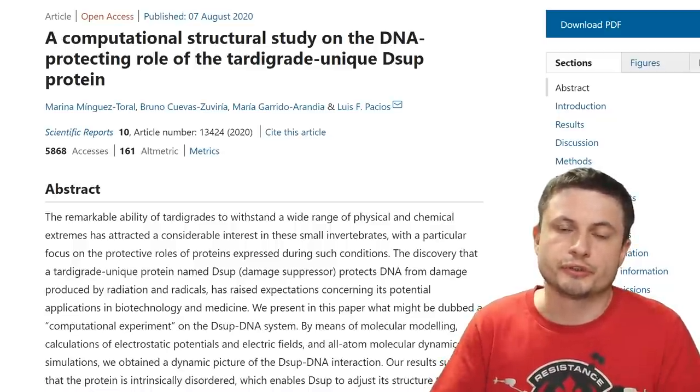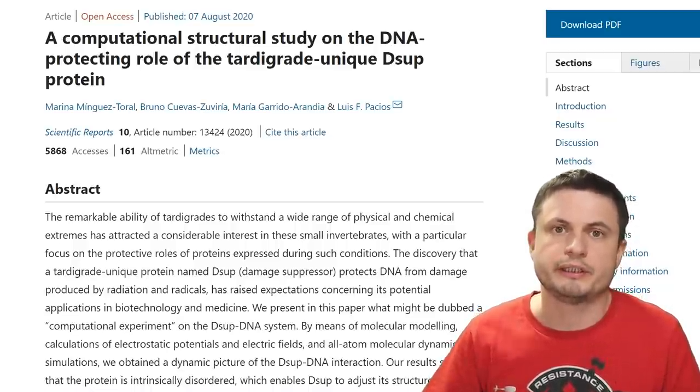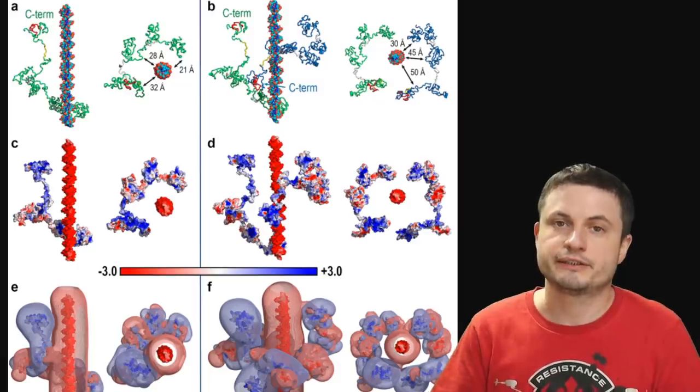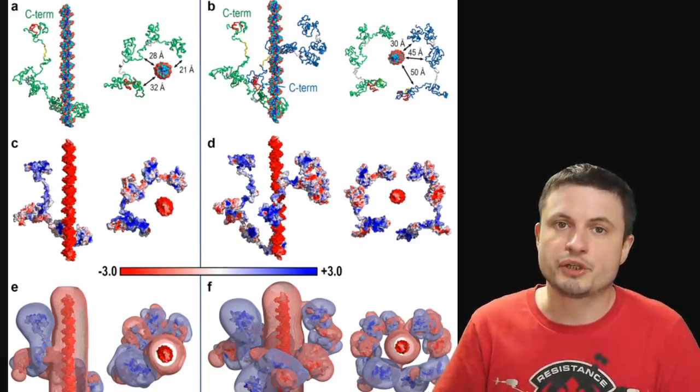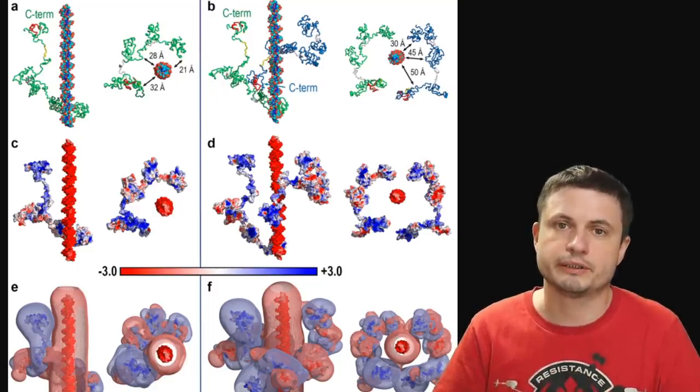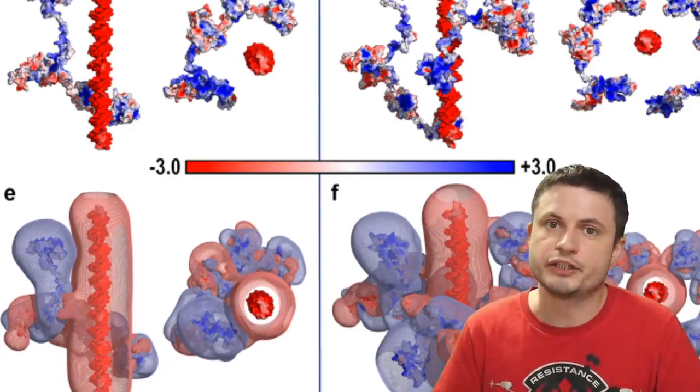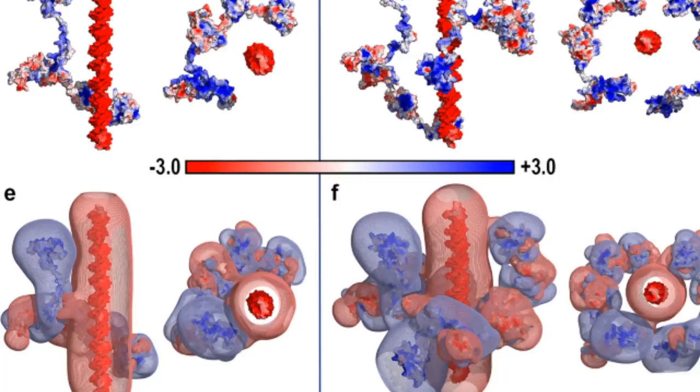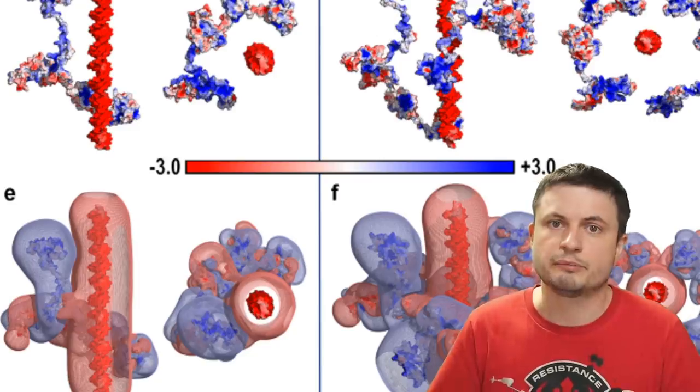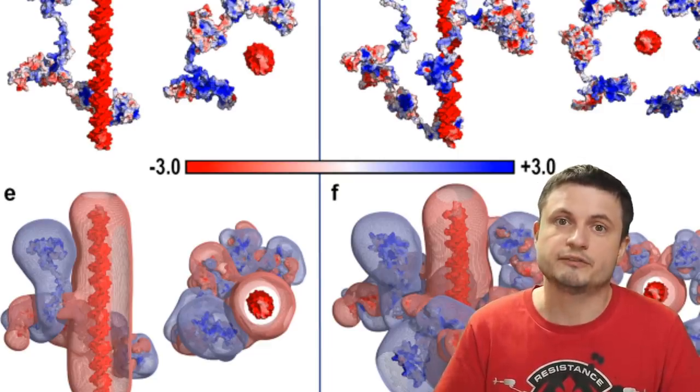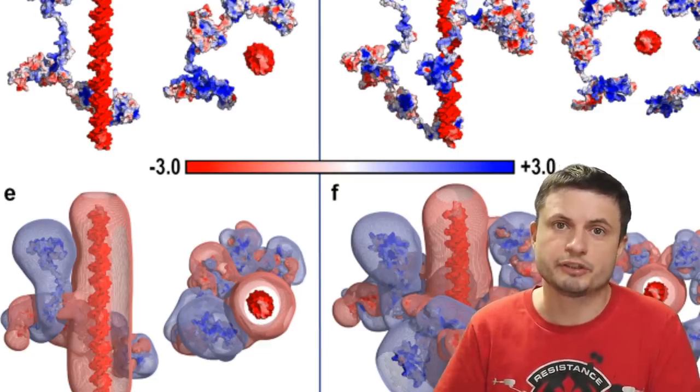We're getting closer to understanding how all of this works. Turns out that this Dsup protein is created as a kind of an imperfect disordered protein. It's created in such a way that it's not naturally stable, and because of this it has a tendency to wrap around other molecules, specifically the DNA molecule, in very specific conditions. In this case we're talking about some sort of a danger coming from the outside like radiation. Tardigrades are able to activate this protein and it starts wrapping around their DNA, essentially protecting it from any radiation or from any other hazards that might come from the outside. It's a very unique adaptation technique and it seems to have served them very effectively for millions of years.